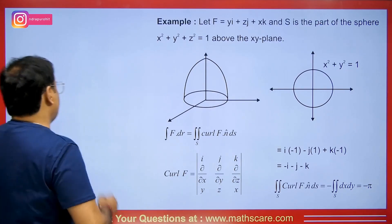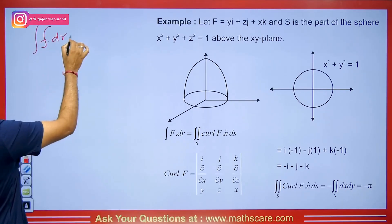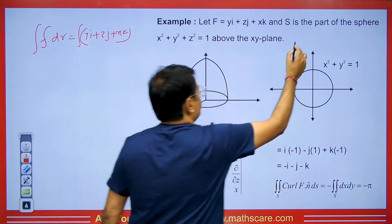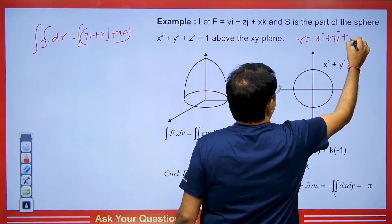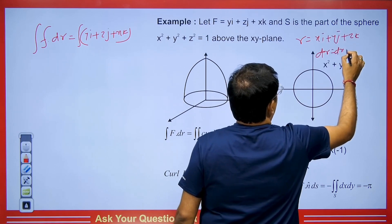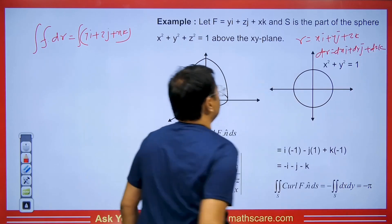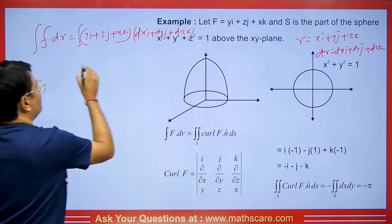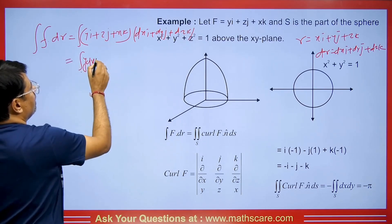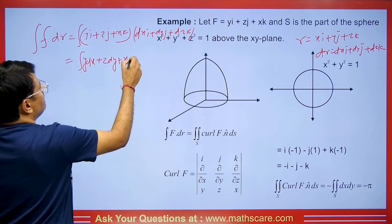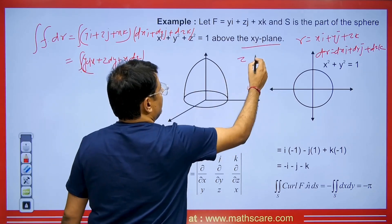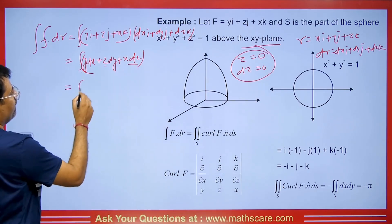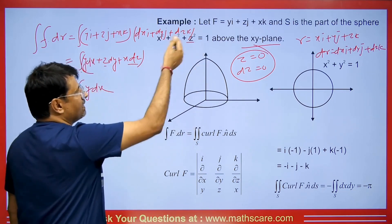We will calculate the value of f dot dr directly. Here f = yi + zj + xk, and dr = dx i + dy j + dz k. Taking the dot product gives y dx + z dy + x dz. Since we are on the xy plane, z = 0, so dz = 0 as well. This simplifies the integral to just y dx.